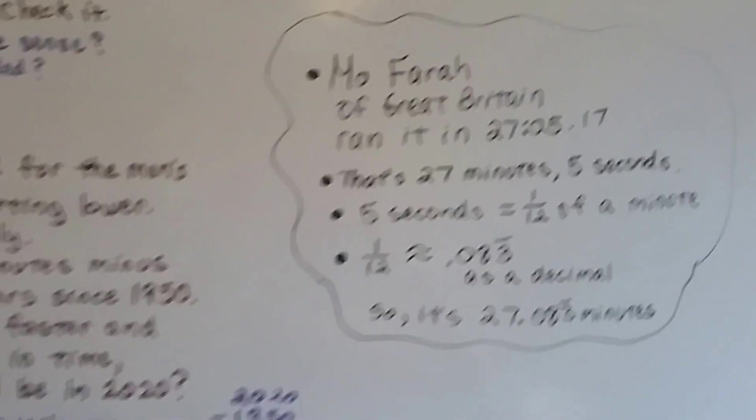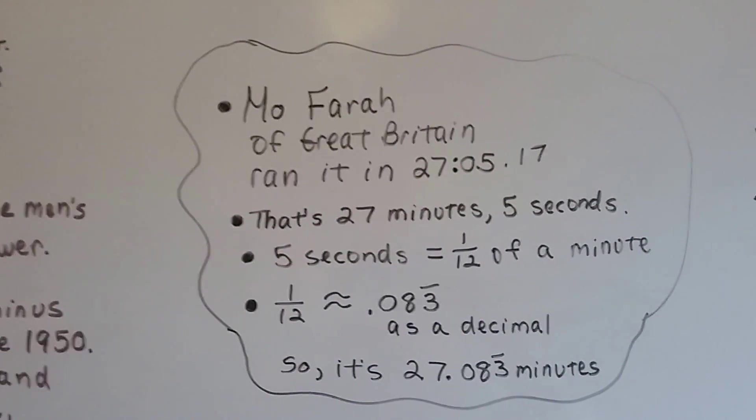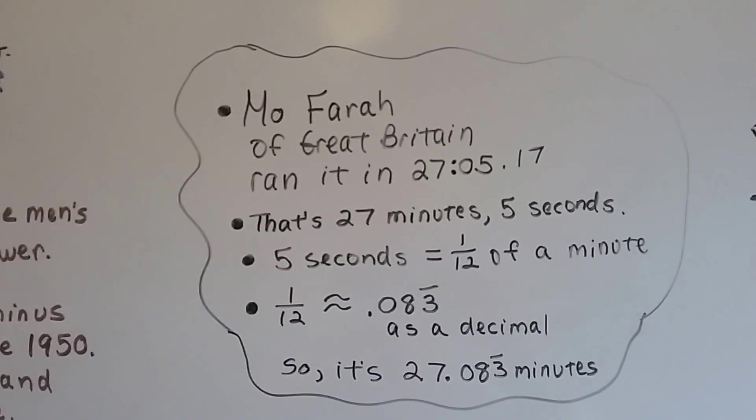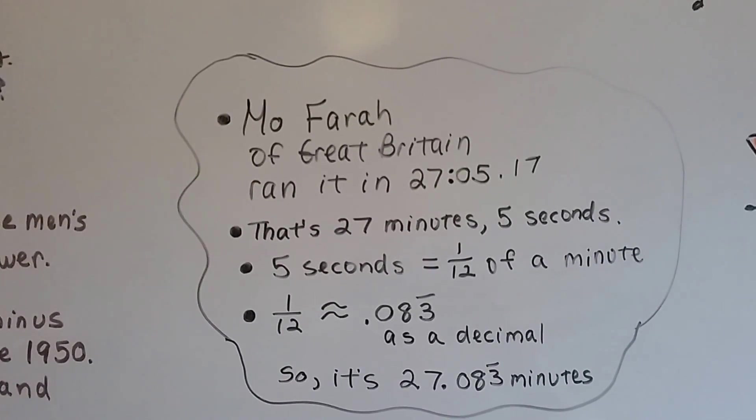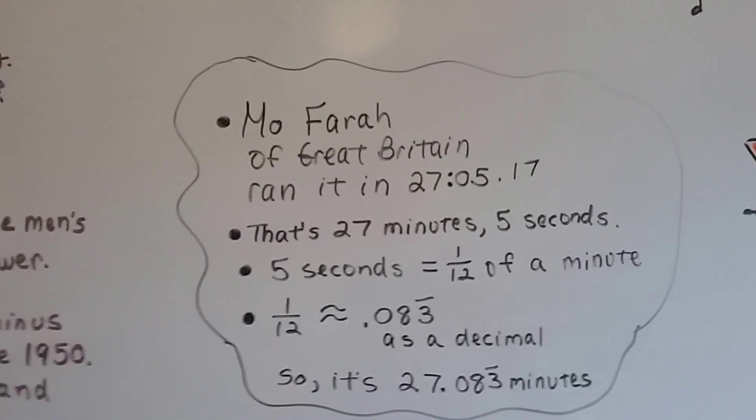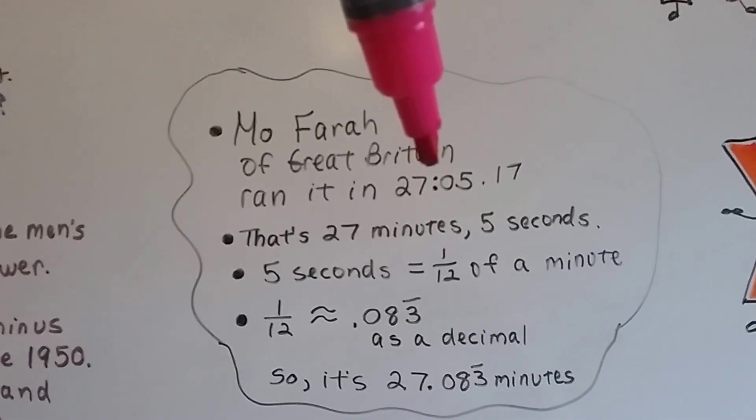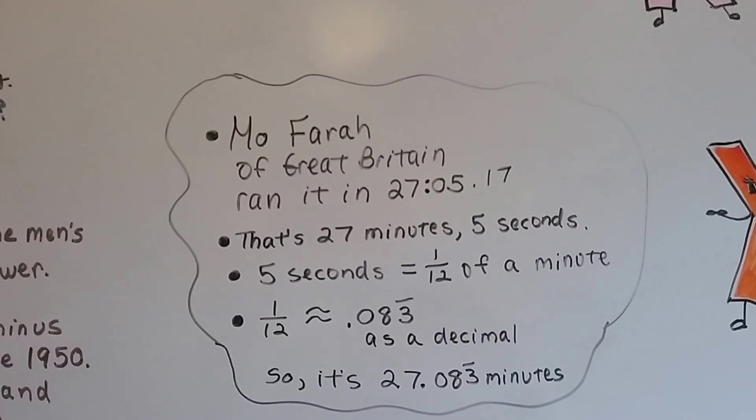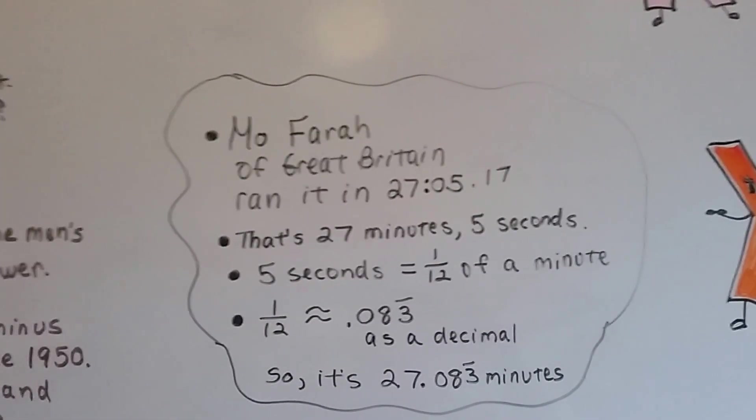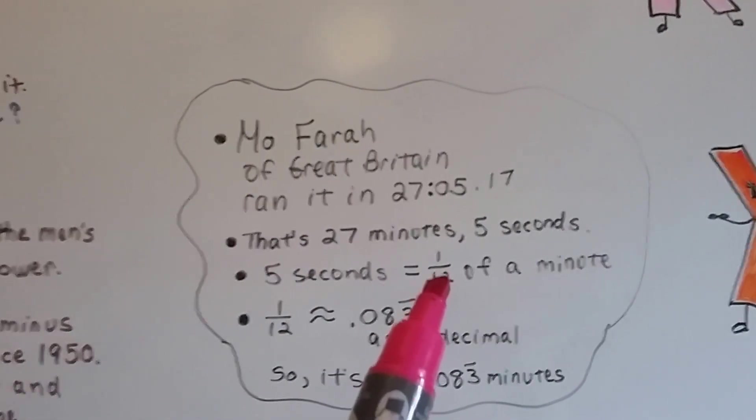Now, I hope you have your thinking caps on. In 2016, Mo Farah of Great Britain ran the 10,000 meter run and his world record was 27 minutes 5.17 seconds. Now, because this is written with this colon right here, that's 27 minutes 5 seconds or 5.17 seconds. Now, 5 seconds is 1 twelfth of a minute.